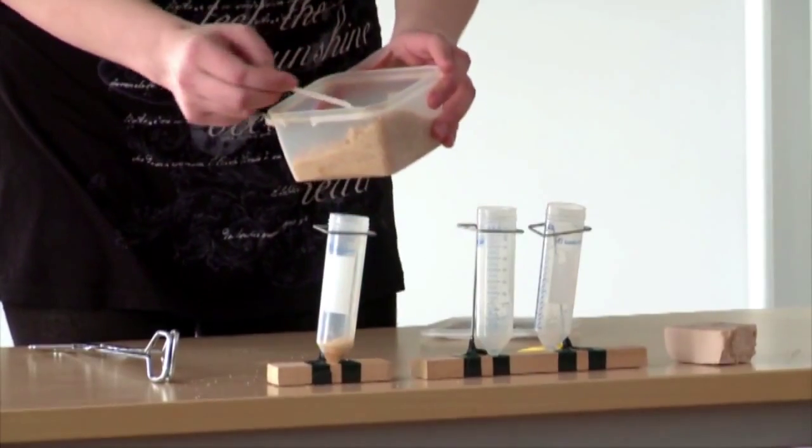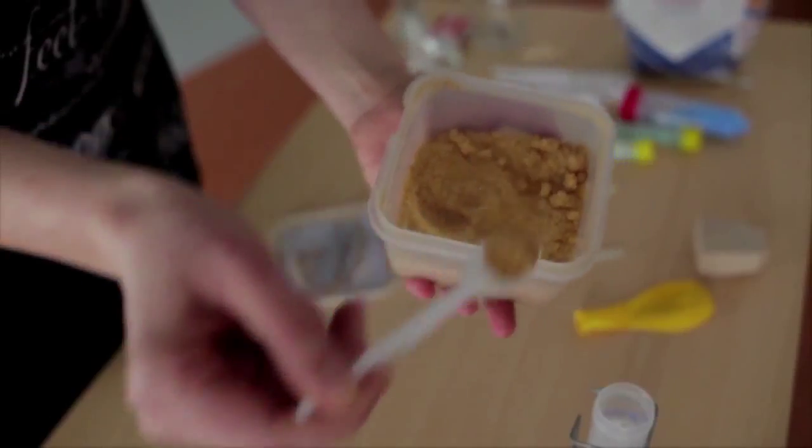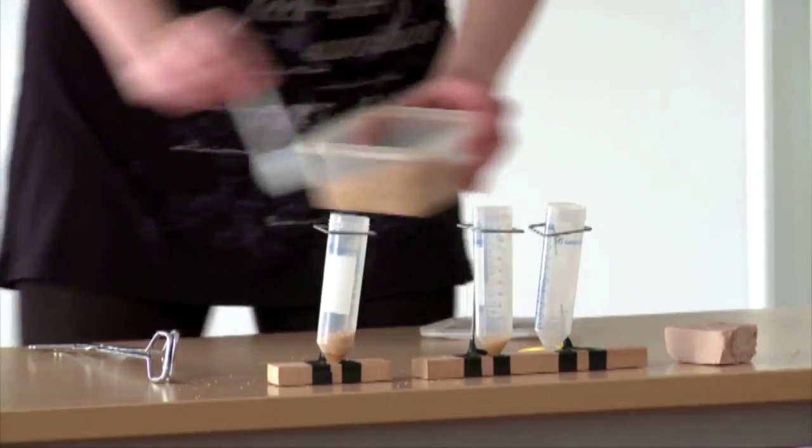We put two teaspoons of sugar into the first container, into the second, half a teaspoon, into the third, none.